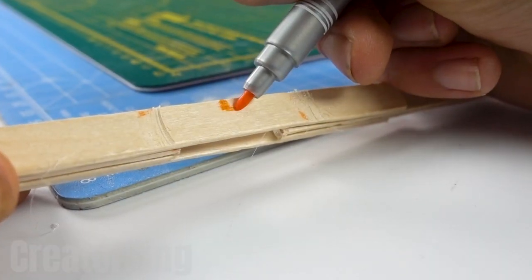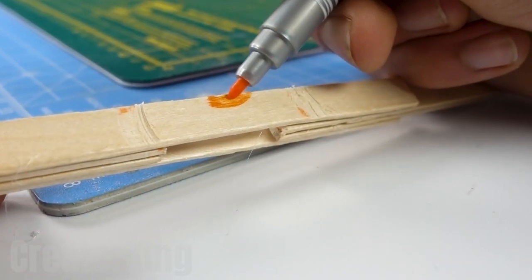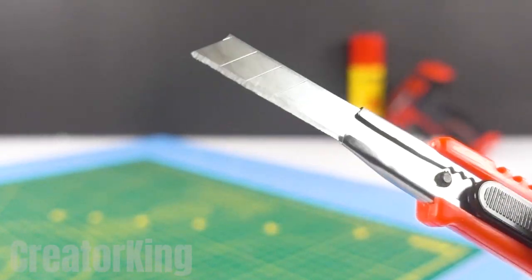With the help of a marker we'll draw a half circle on our little construction that we'll cut out with the help of our sharp cutting tool.